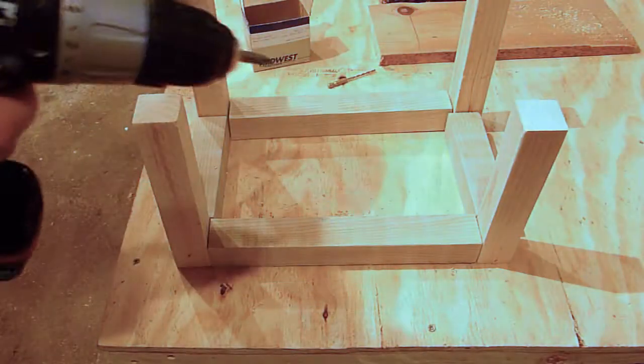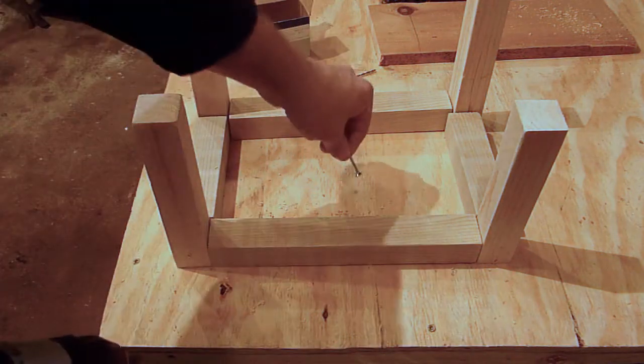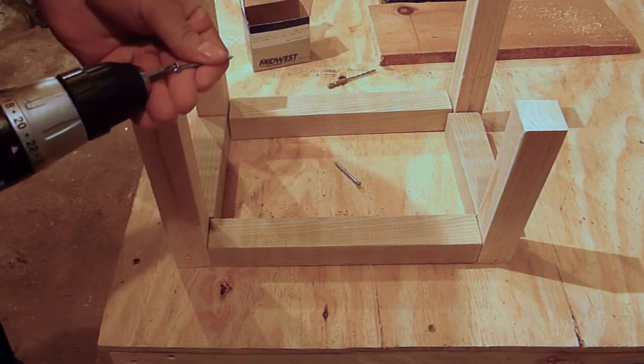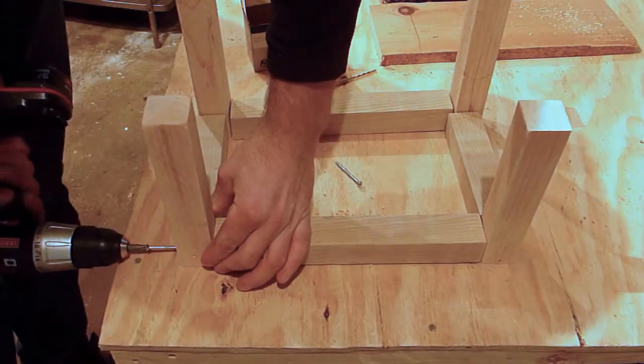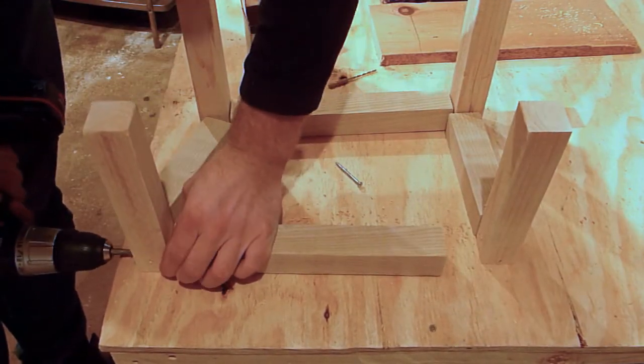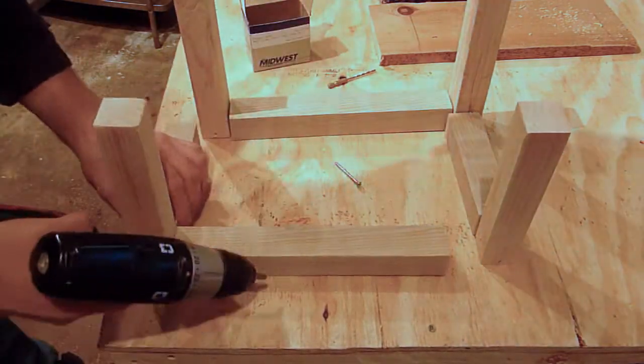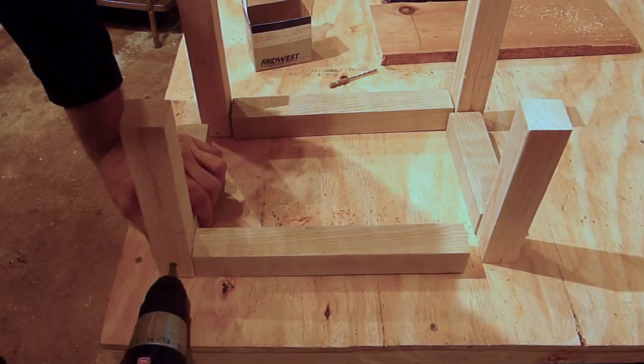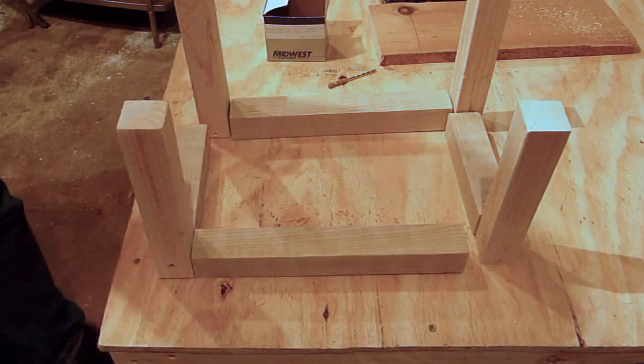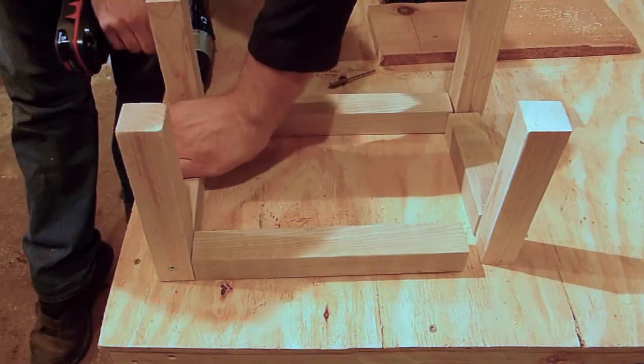And then just screw in through the holes that you drilled, screwing in the supports together. Screw them in about a quarter inch into the wood. Once you get to the surface of the wood just continue screwing about a quarter inch so they're countersunk.